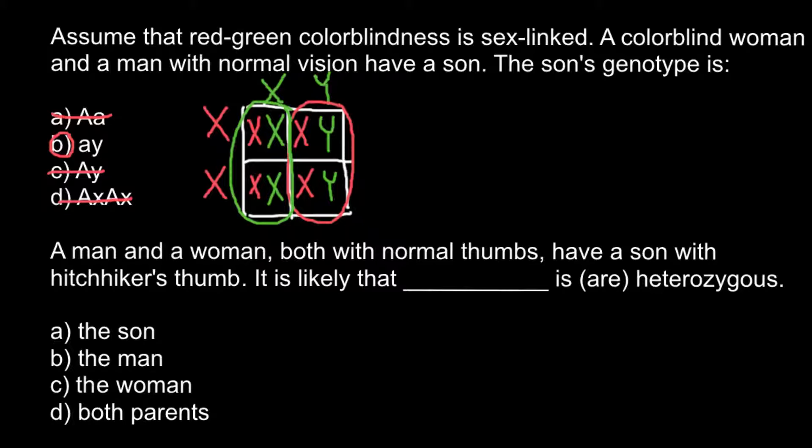Now the second question. A man and a woman, both with normal thumbs, have a son with hitchhiker's thumb. You have to fill in the blank: it is likely that the parents are heterozygous. We know that straight thumb is the dominant trait and hitchhiker's thumb is the recessive trait.